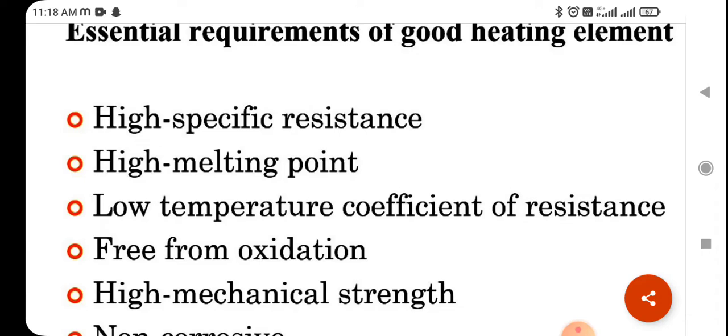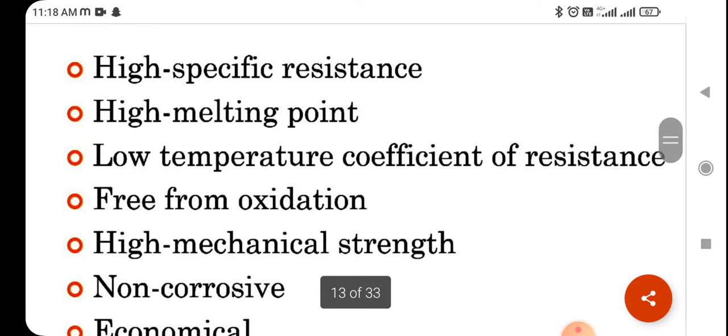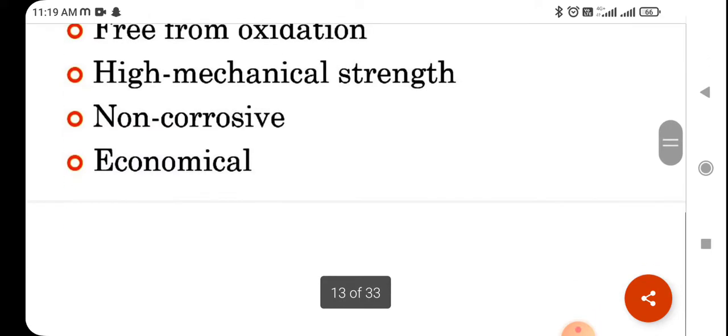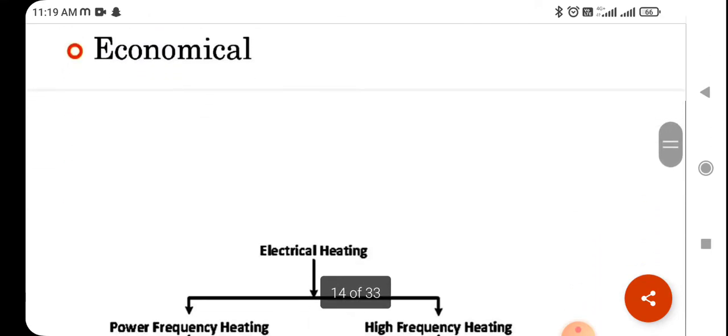Second is high melting point, low temperature coefficient of resistance, that is alpha. Free from oxidation, high mechanical strength, non-corrosive. Last one is economical, that is most important from electrical point of view.